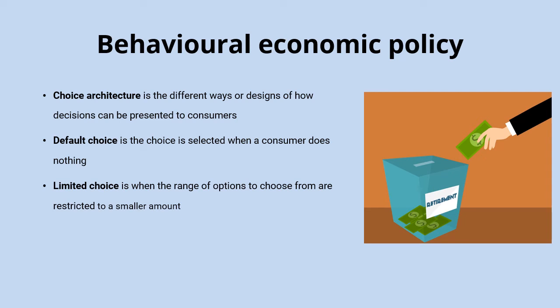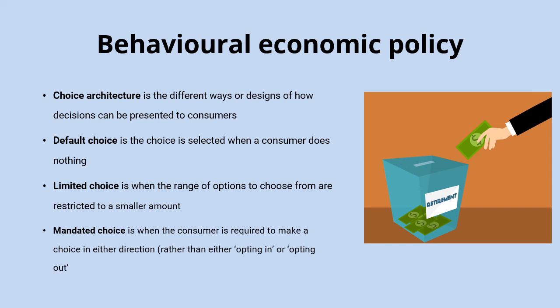Limited choice is when the range of options is restricted to a smaller number, which has been shown to help people make better decisions. With retirement plans and pension options, traditional economics suggests giving everyone the full range — potentially hundreds of options — to make the best decision. But people generally decide better when limited to maybe three options: a high-risk, medium-risk, and low-risk plan, rather than sifting through all that information themselves.